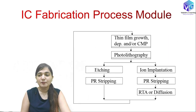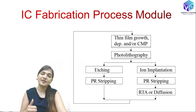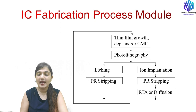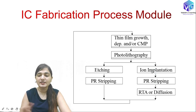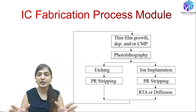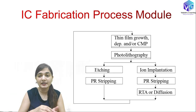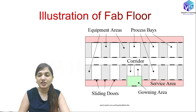Looking at the IC fabrication process module: the full process begins with the deposition of a thin film — an oxide layer — upon which photolithography is performed. With photolithography we can then perform etching and photoresist stripping, followed by diffusion or ion implantation. Both of these processes require etching, which means removing the oxide layer from a particular area so that we can diffuse or implant an impurity into the substrate.